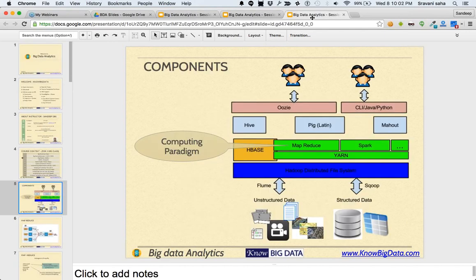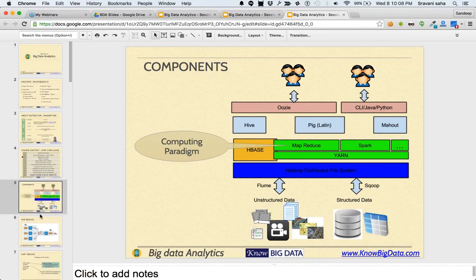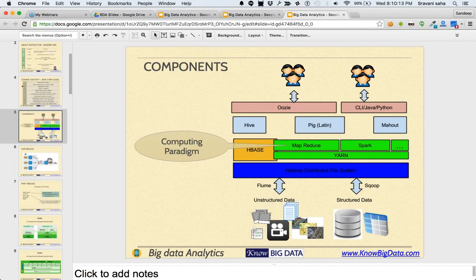Today we are going to discuss the map reduce part. Yesterday we talked about how the job tracker and task tracker work. There's something called job tracker and other nodes which are called task trackers. We assign work to the job tracker and that gets passed on to the task trackers. Job tracker assigns the work to various task trackers, observes the task trackers. In case somebody goes down, it reassigns that work to somebody else and gets it done.